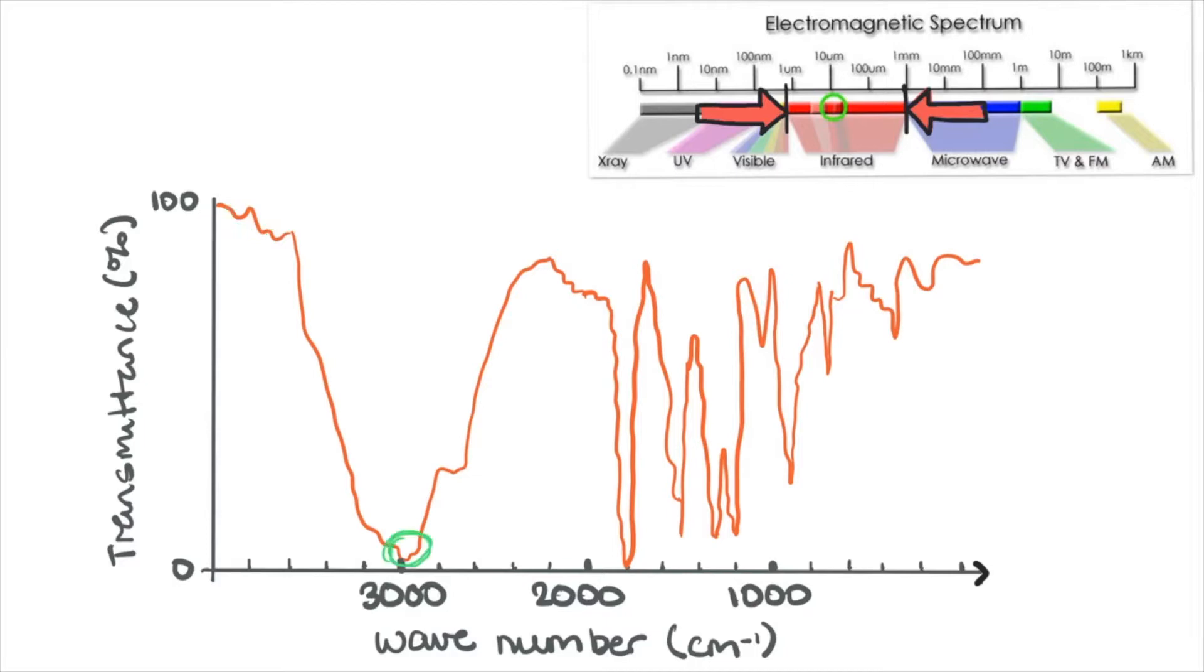This means there's a particular functional group in this sample that is absorbing that particular wavelength of IR light.